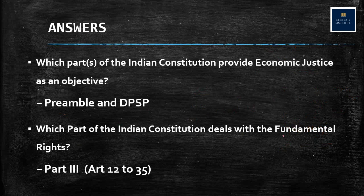Which part of the Indian constitution deals with fundamental rights? That is Part 3 of the Indian constitution. To have a brief overview: Part 1 deals with the union and its territories, Part 2 is about citizenship, Part 3 is fundamental rights, Part 4 is the Directive Principles of State Policy, and Part 4A is fundamental duties. There are many more parts — at least remember the important ones. So, Part 3 is fundamental rights.